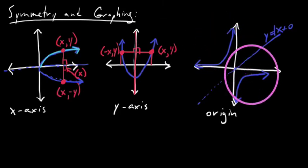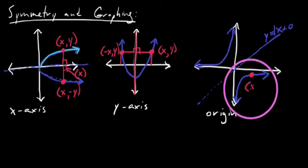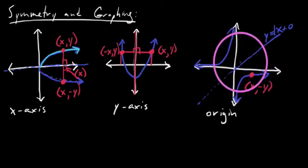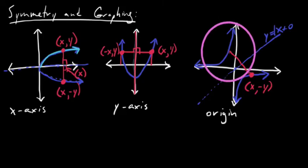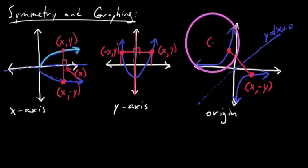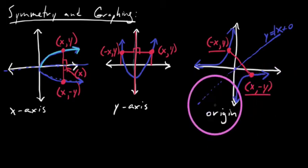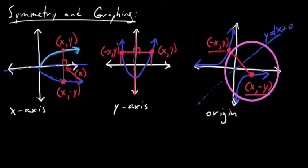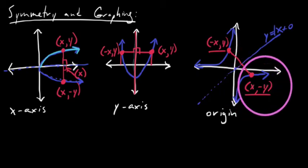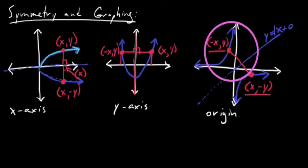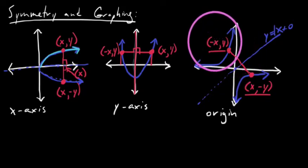With origin symmetry, given some point, if you were to flip the sign of both the X and the Y-value of that point, you would land at the other symmetrical point on the other side of the line of symmetry — in which both signs have been flipped. Given some positive X and negative Y, drawing the straight-line distance to the line of symmetry, you'd end up at the corresponding negative X and positive Y-value.